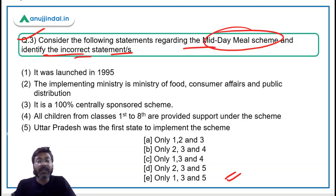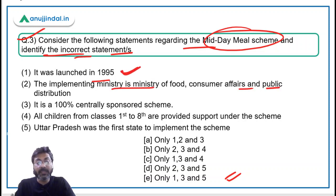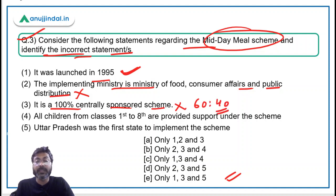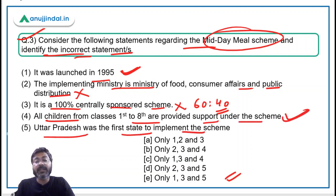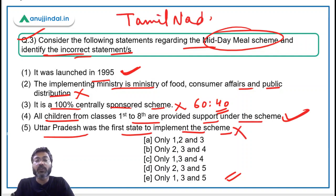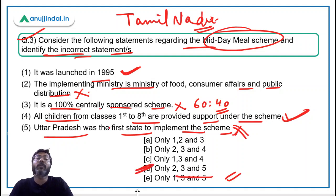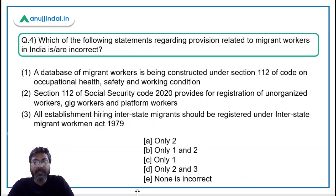For Question 3, evaluating each statement: 'It was launched in 1995' — correct. 'The implementing ministry is Ministry of Food, Consumer Affairs and Public Distribution' — incorrect; the correct ministry is Ministry of Education. 'It is a 100% centrally sponsored scheme' — incorrect; the ratio is 60:40. 'All children from Classes 1 to 8 are provided support' — correct. 'Uttar Pradesh was the first state to implement the scheme' — incorrect; it was Tamil Nadu. Therefore, statements 2, 3, and 5 are incorrect, making the correct answer option D.